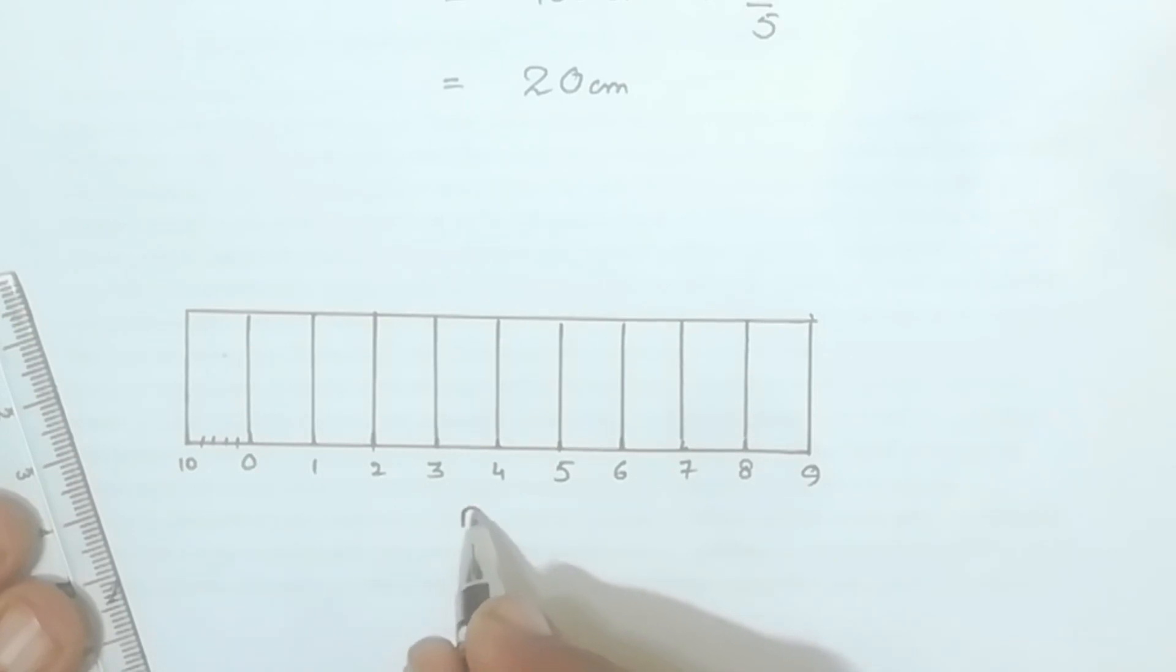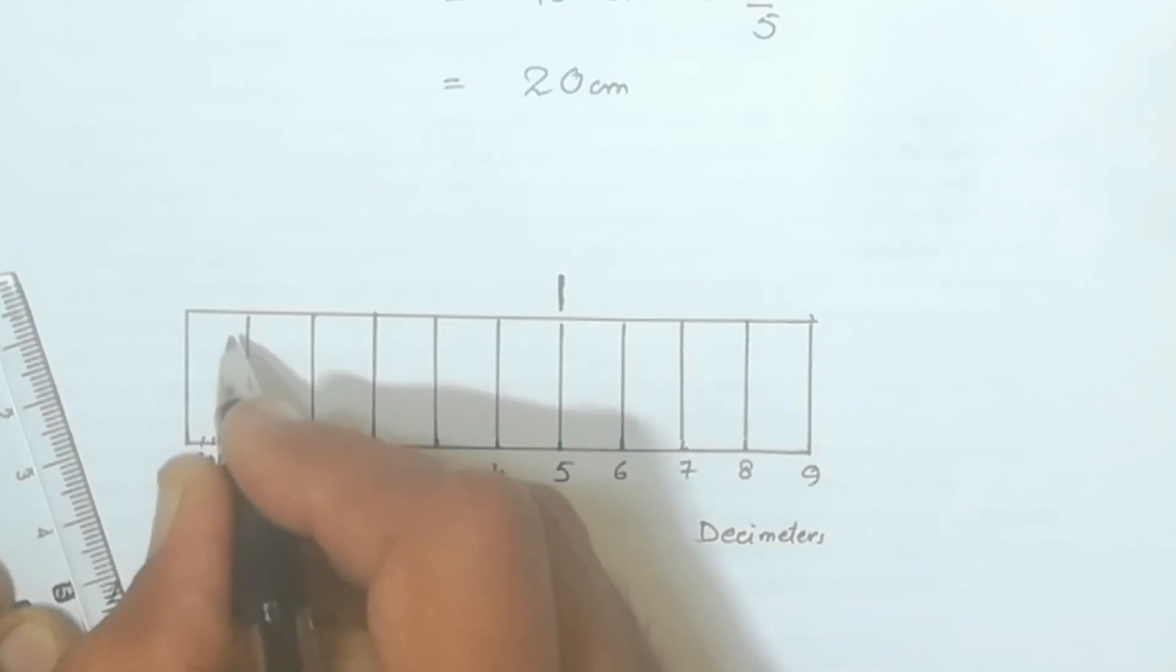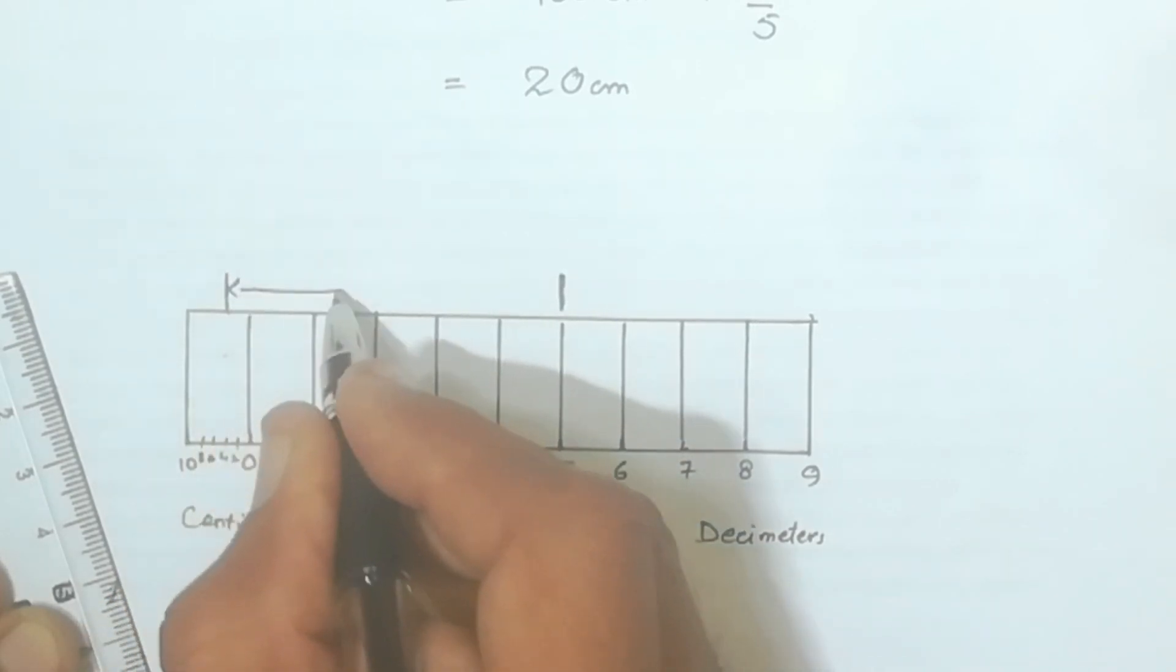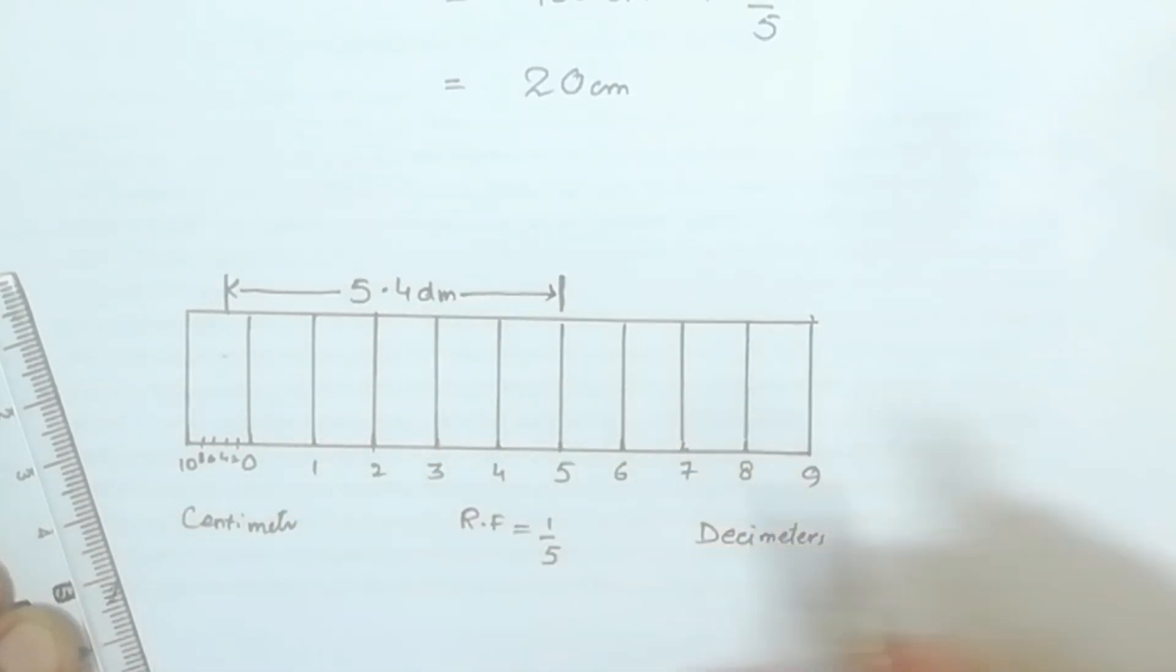So here it will come 1 divided by 5, here it will come 10 decimeters, and left it will come 10 decimeters. Now for example, I will show you 5.4. So this will come 5 for this line and 4 for this, so this will come 5.4 decimeters I can show you. I hope that you will understand this problem. Thank you.